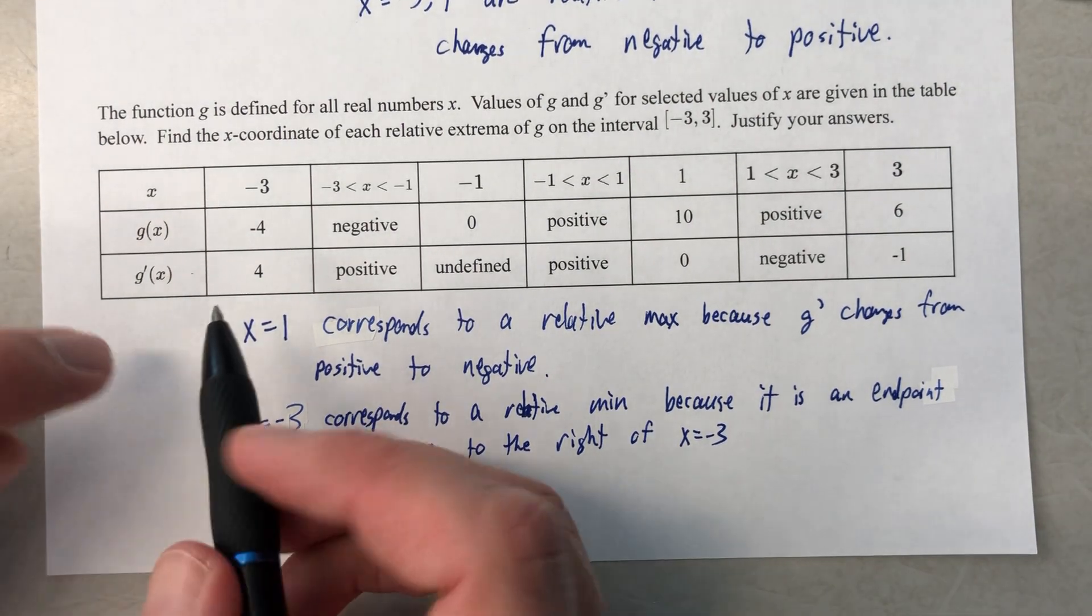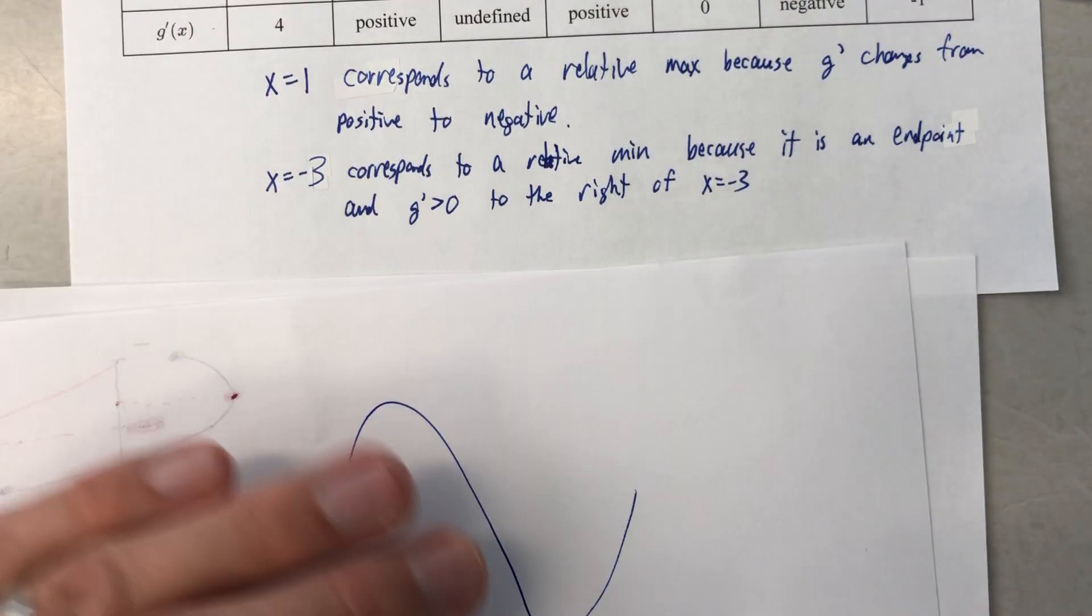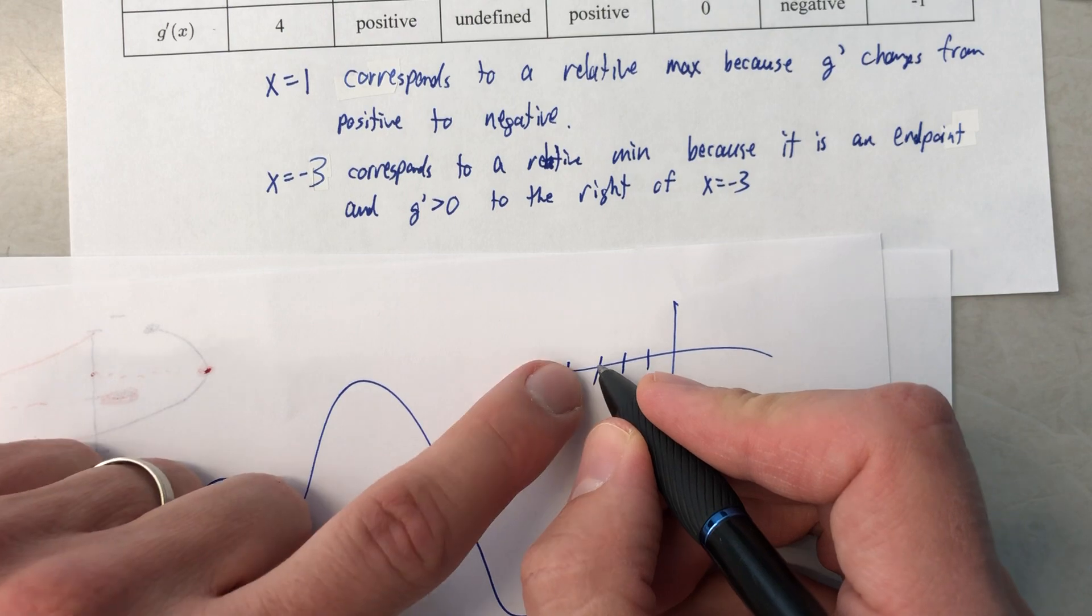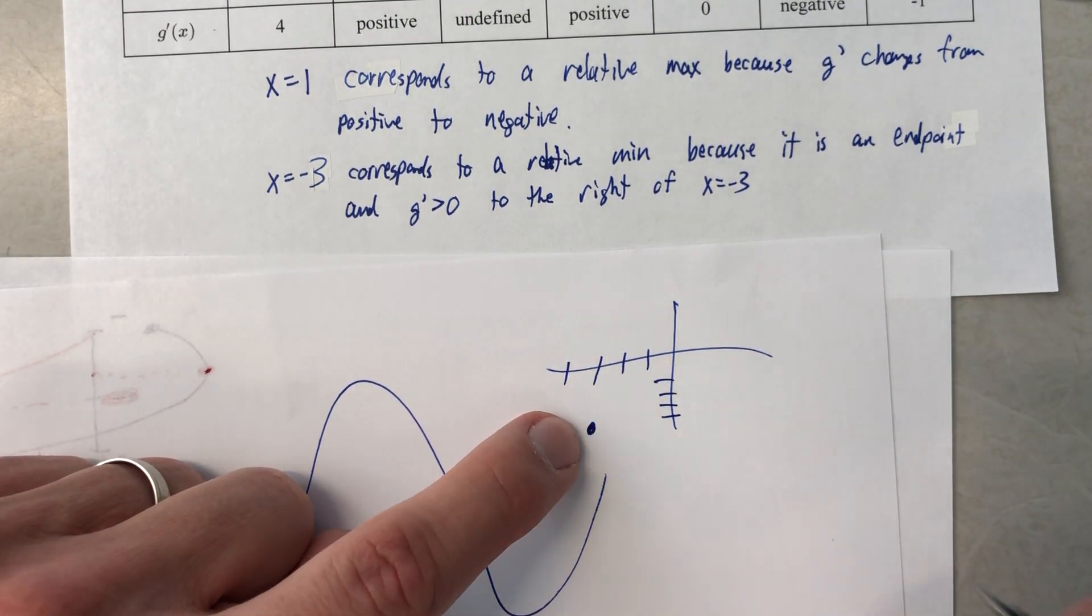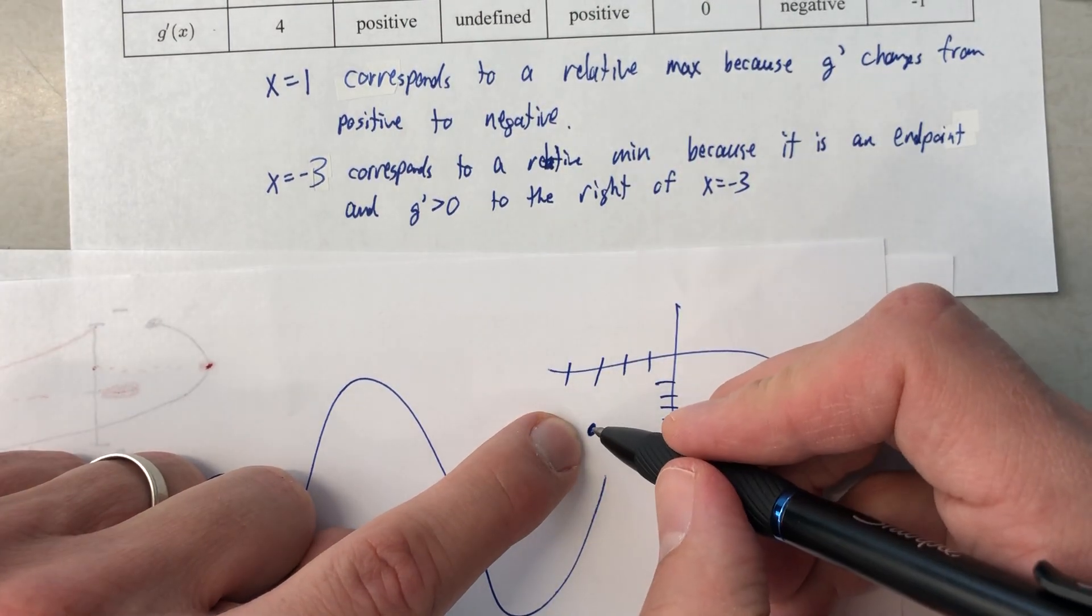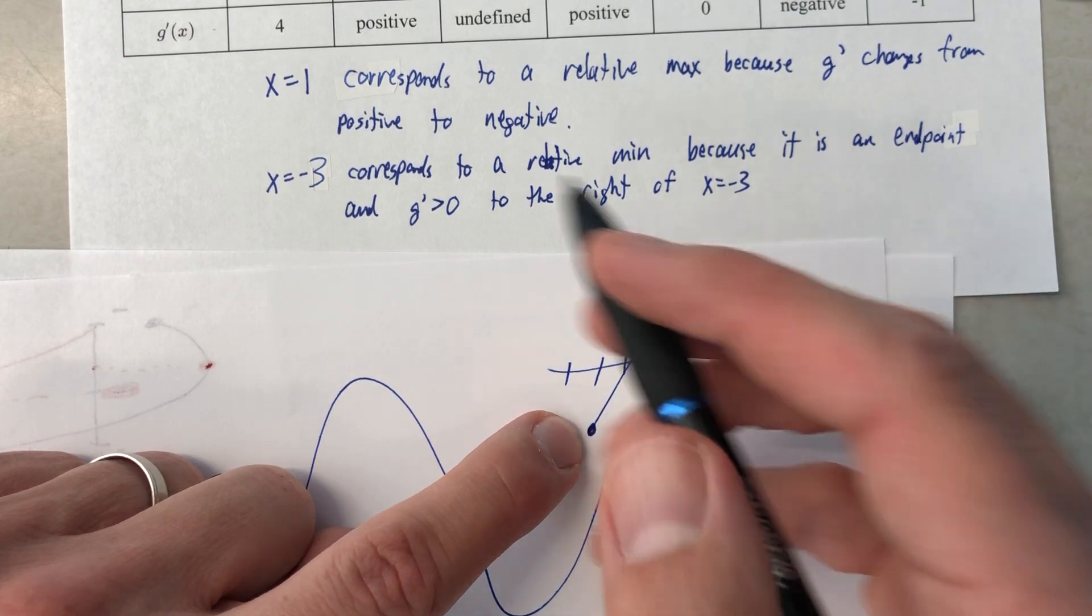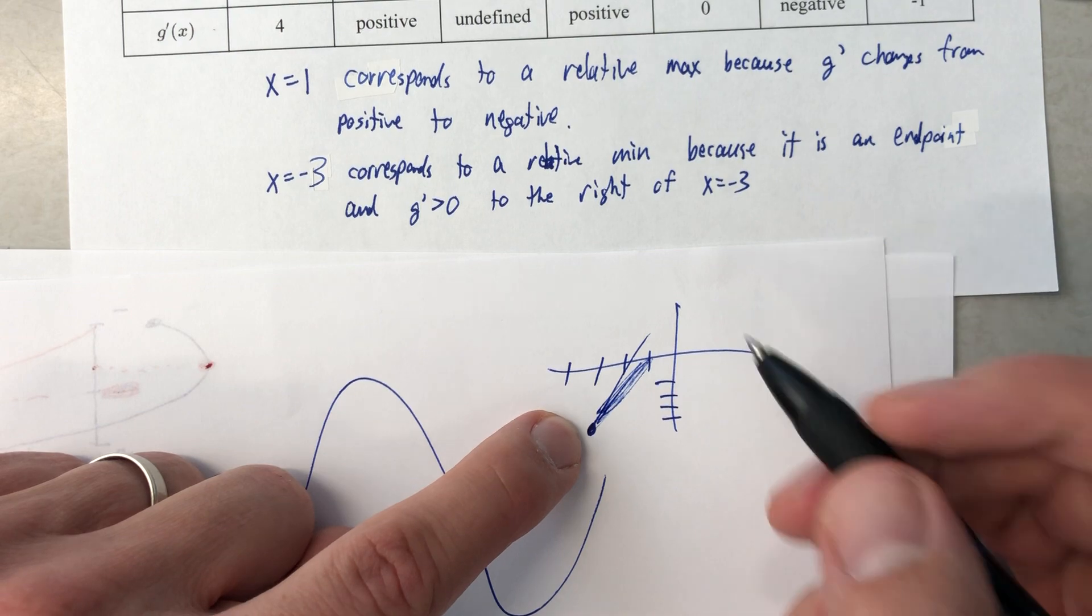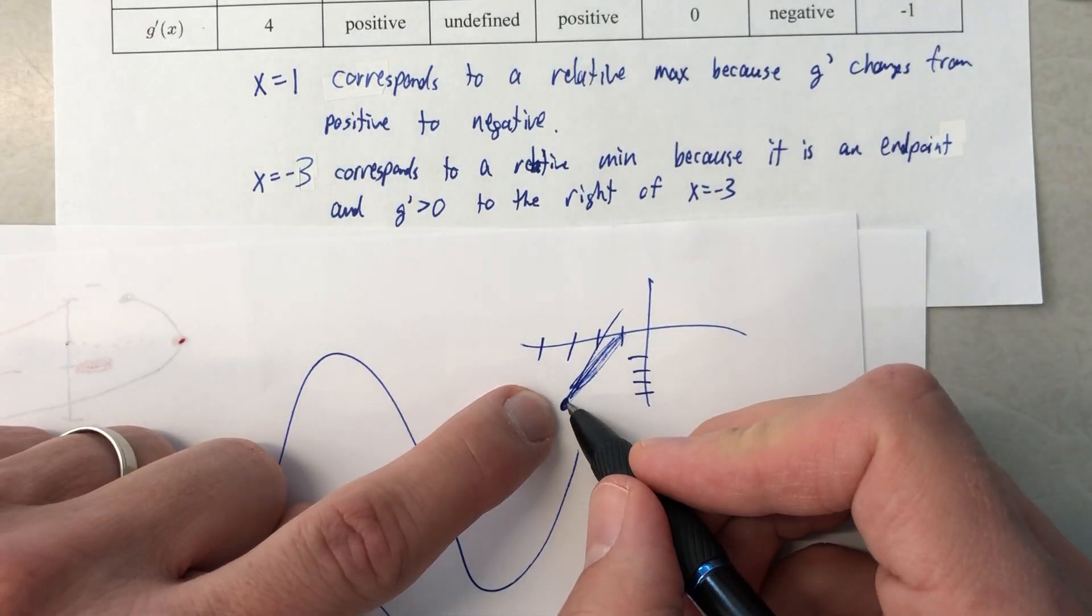Here, let me show you what's going on in my head. At negative 3, we're down here at negative 4, y value of negative 4. And then the derivative is positive, so we have a function that is increasing. The function itself is negative up to negative 1, but this is going to be a minimum.